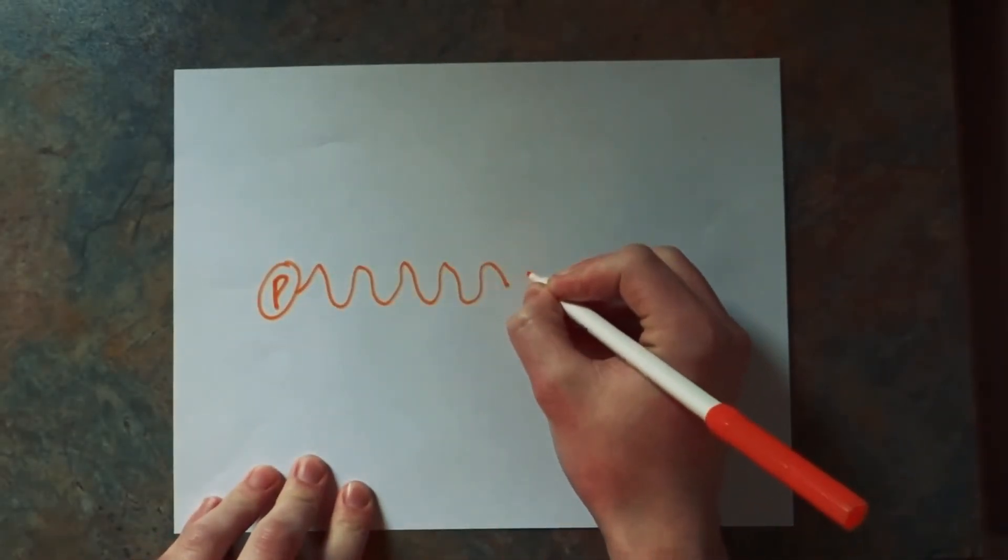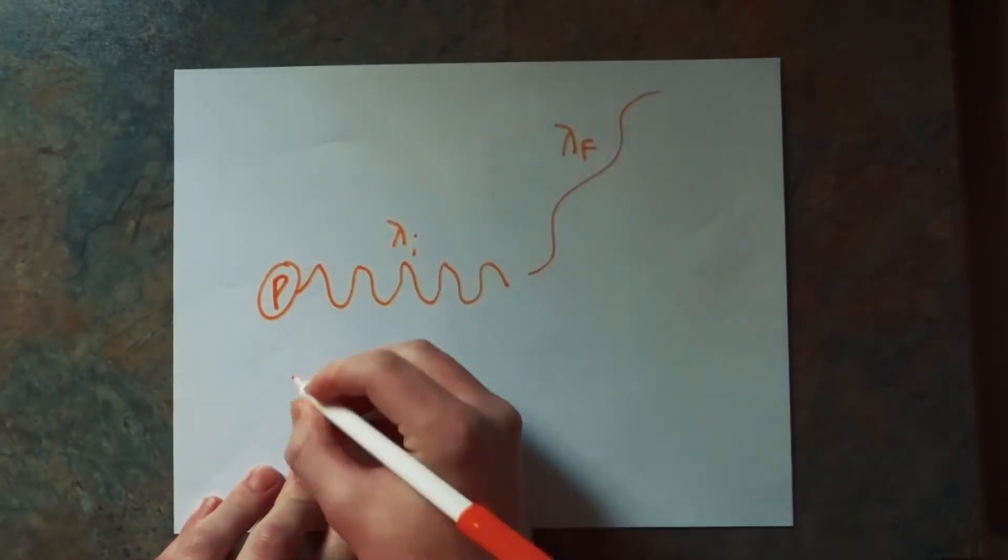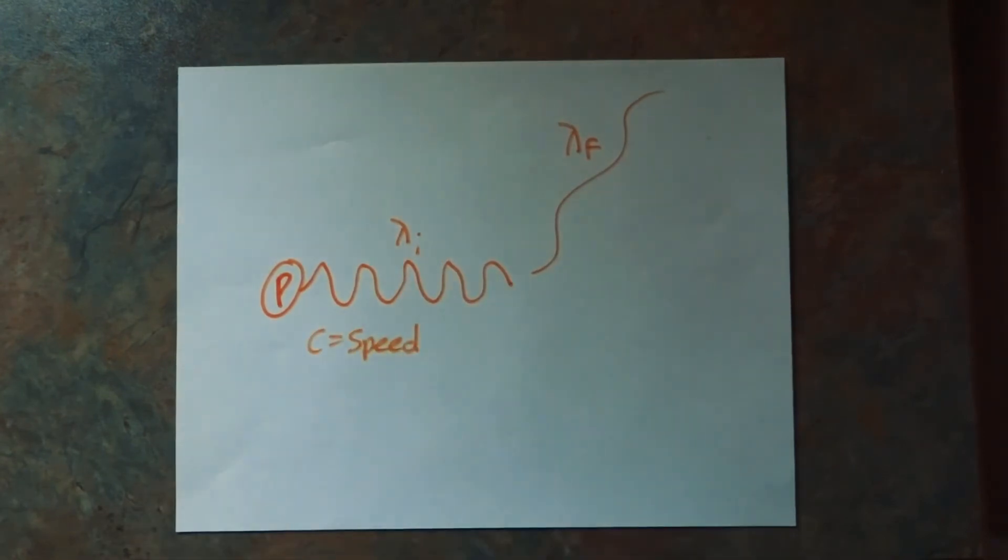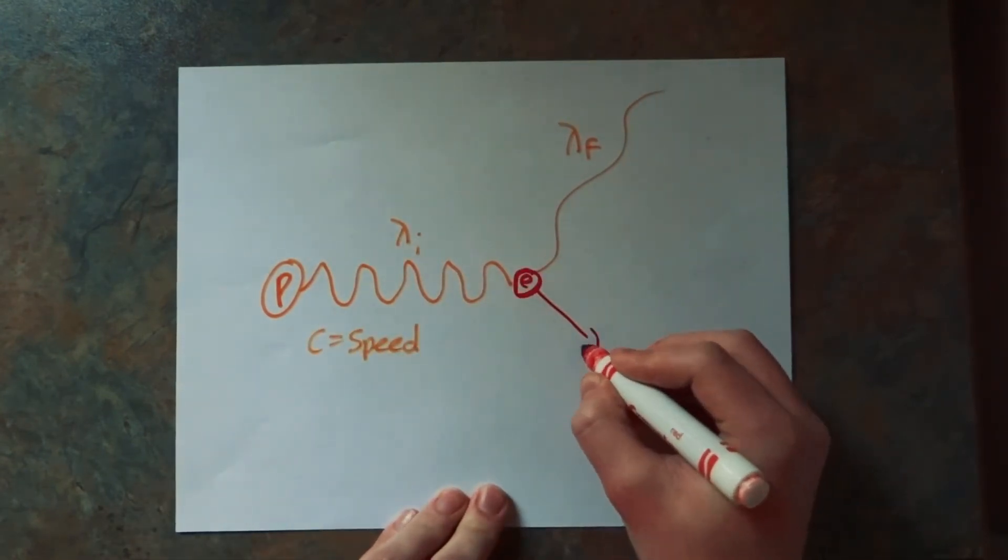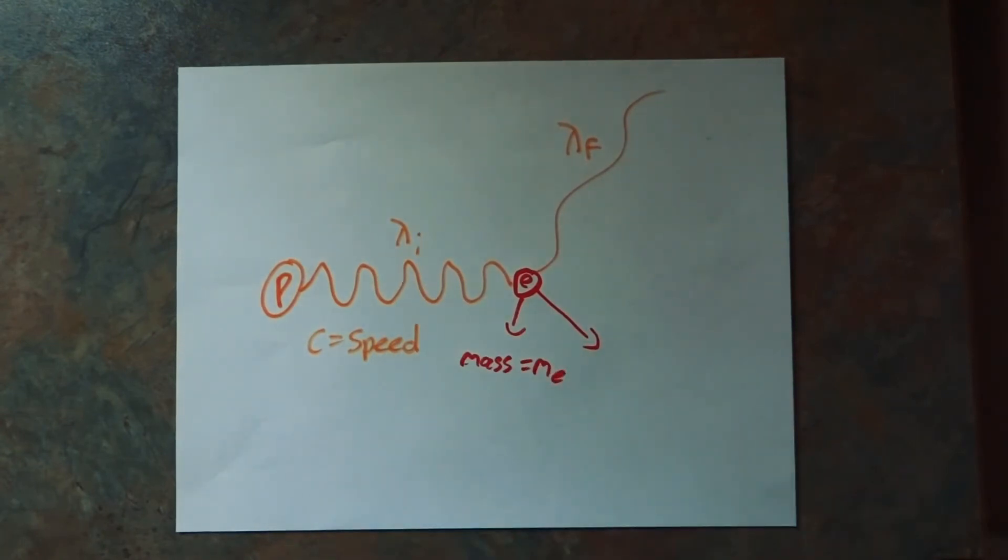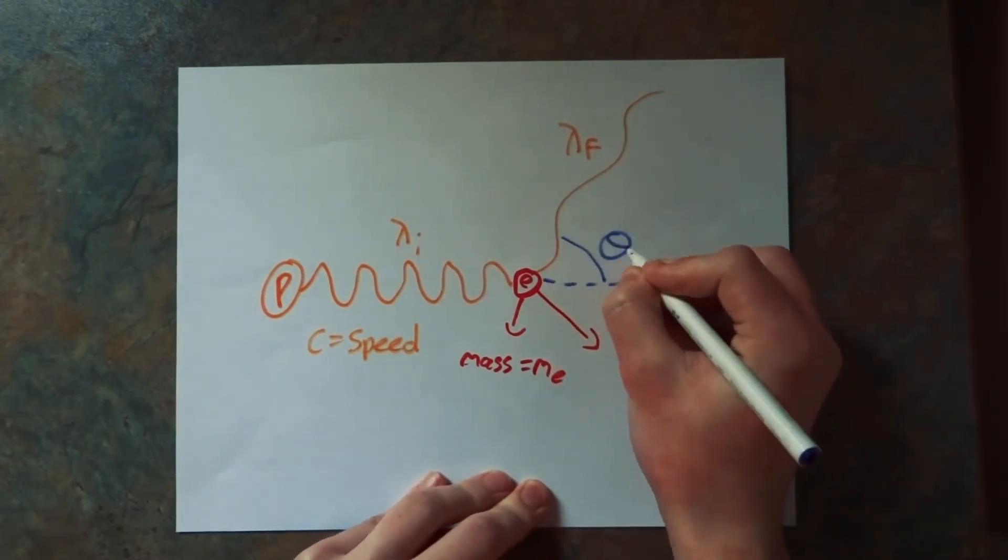When an x-ray charged photon collides with an electron, you can find the initial wavelength, the final wavelength, and the speed, which is c. Then you have the mass of the electron and the angle of scattering.